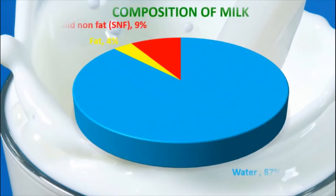The General Composition of Milk: Milk contains majorly 87% of water. Along with it, it contains 9% of solid non-fat components and 4% of fat.